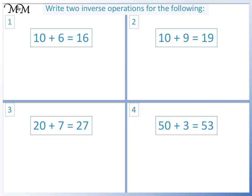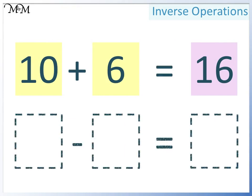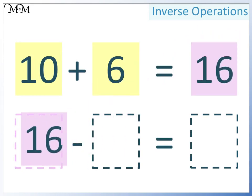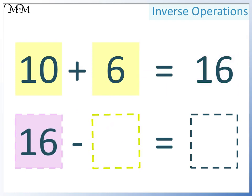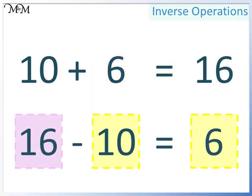Question 1: 10 plus 6 equals 16. We write the largest number at the beginning. 16 is the largest number. In the next space, we can write either of the two smaller numbers. This time, we'll write 10. In the final space, we'll write 6. 16 take away 10 equals 6.